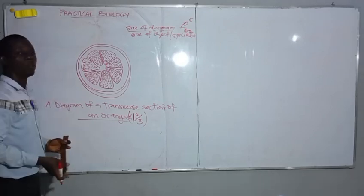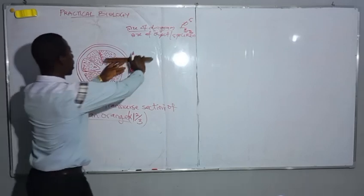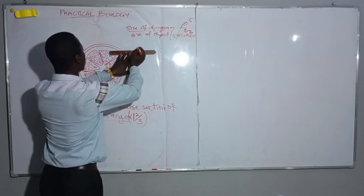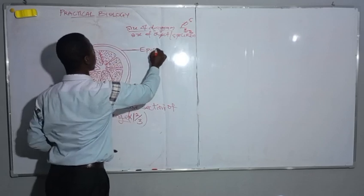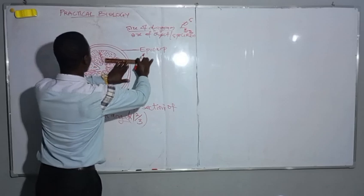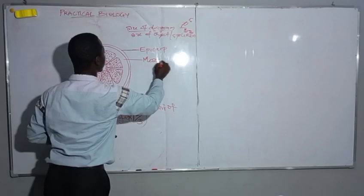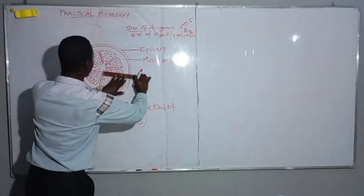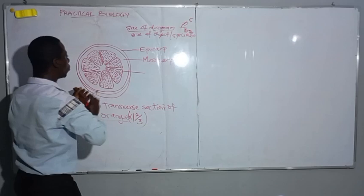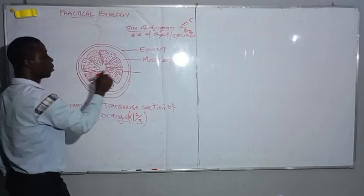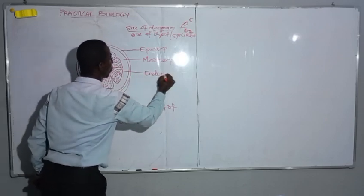Ensure that you are labelling with a ruler — your guidelines are drawn with a ruler. We start with the epicarp, the outer part of the orange. The inside is the mesocarp, and this is the endocarp. Always ensure that your label guidelines are touching the parts you are labelling.